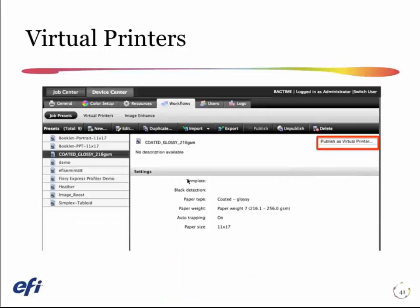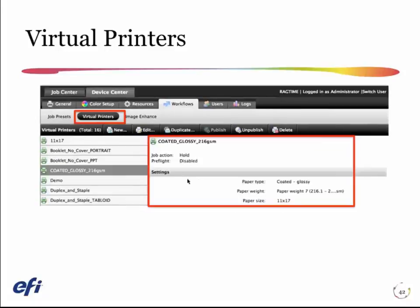Here is an example of creating a virtual printer. I basically go to my job presets and there's a button that will publish this as a virtual printer. I can then go into that virtual printer I've created and, if I have the preflight option and want to use it, I can specify to preflight jobs in addition to using these exact settings. As you see here, this is specifying the paper type and the paper weight, and if we dug down a little more into this configuration, you'd see the calibration, the profile, and the job properties for imaging.